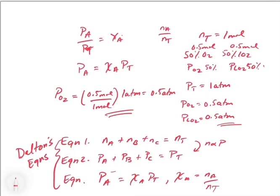Just to make it clear, what we call P sub A is actually what we call a partial pressure. You may see this in a question — for example, it might say 'the partial pressure of oxygen.' That means that in a mixture of gases, the partial pressure of a gas is the pressure of one of the components. So P sub A is also called a partial pressure.